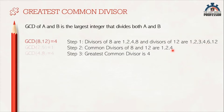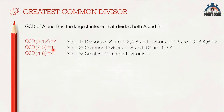Similarly, GCD of 2 and 5 is 1, and GCD of 4 and 8 is 4. There is something important to note: 1 divides all positive integers completely with 0 remainder. Therefore, 1 is a divisor of all positive integers. Hence, GCD of any two numbers is minimum 1. The greatest common divisor for any two numbers cannot exceed the minimum of the two numbers.